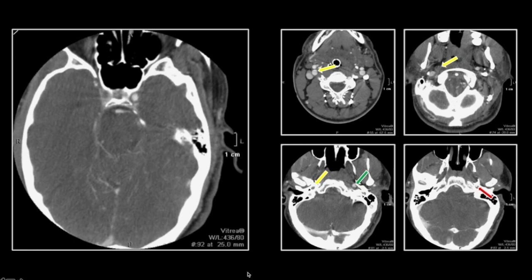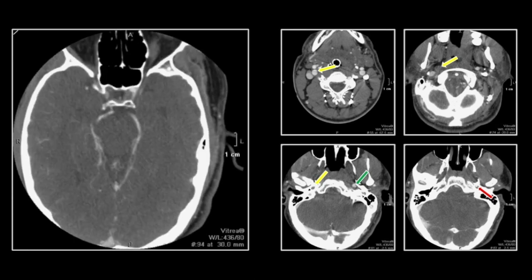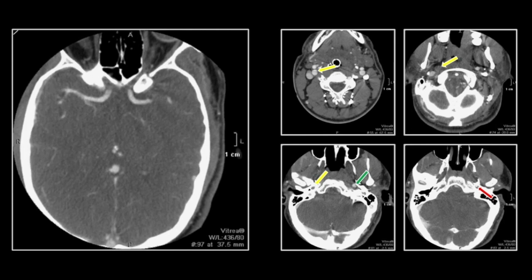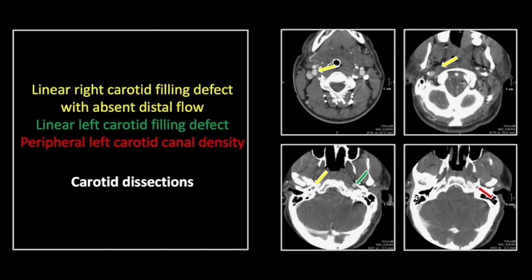At the highest level, you can see the right internal carotid continues to not fill, and there is ultimately collateral reconstitution of the right intracranial vessels. So this was a motor vehicle collision resulting in a bilateral carotid artery dissection.